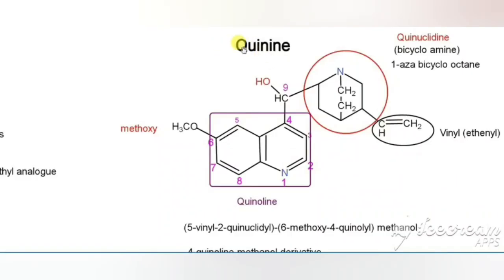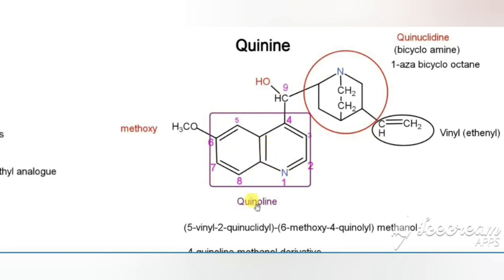Now we will see the first drug under anti-malarials, that is quinine. From the name itself we can say it is a quinoline derivative. Quinoline is the fusion of two rings — one is a benzene ring and another is a pyridine ring. Fusion of benzene with pyridine is called quinoline.